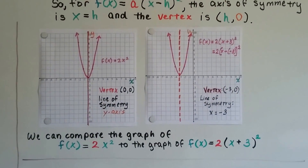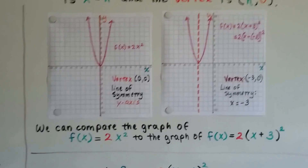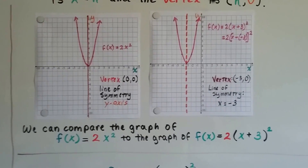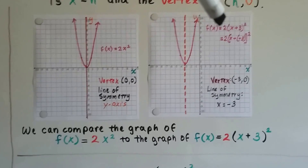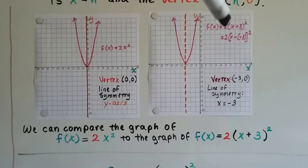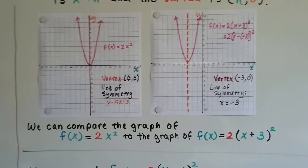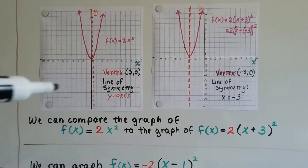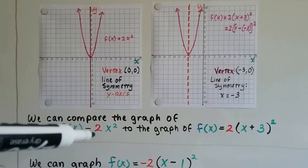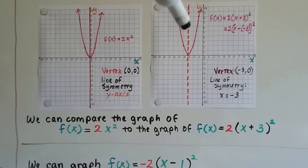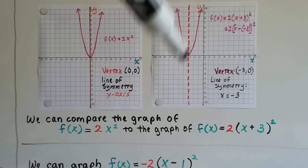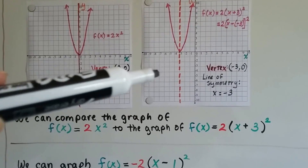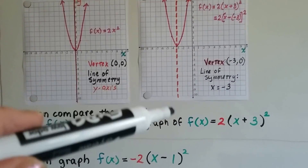Looking at two graphs: f(x) equals 2x squared has its vertex at (0, 0) and its line of symmetry along the y-axis. But for f(x) equals 2 times the square of the quantity (x plus 3), the vertex is at (-3, 0) and the line of symmetry is x equals negative 3.